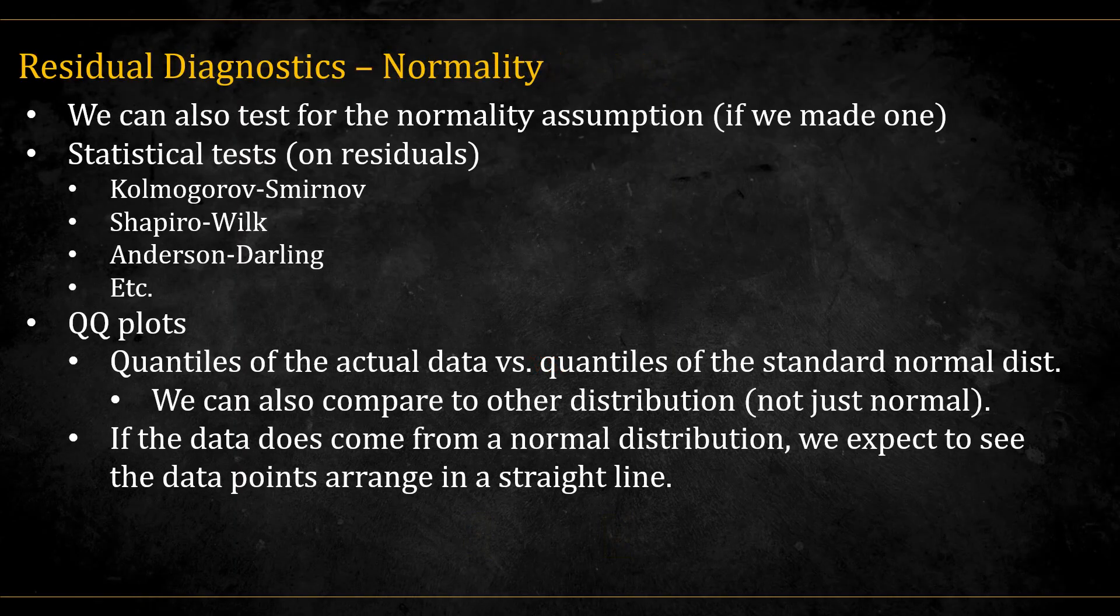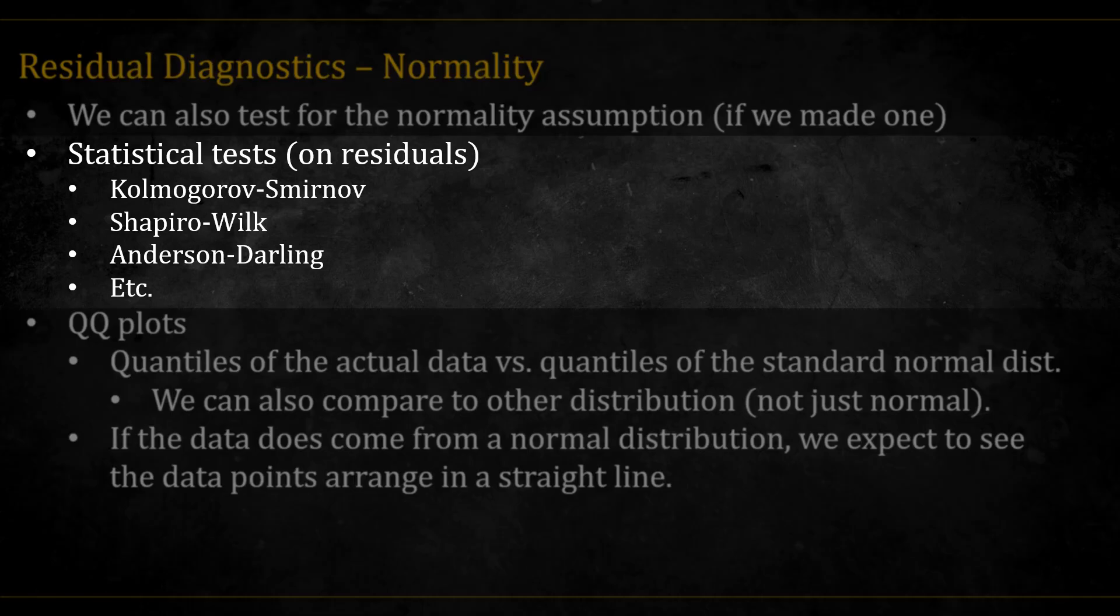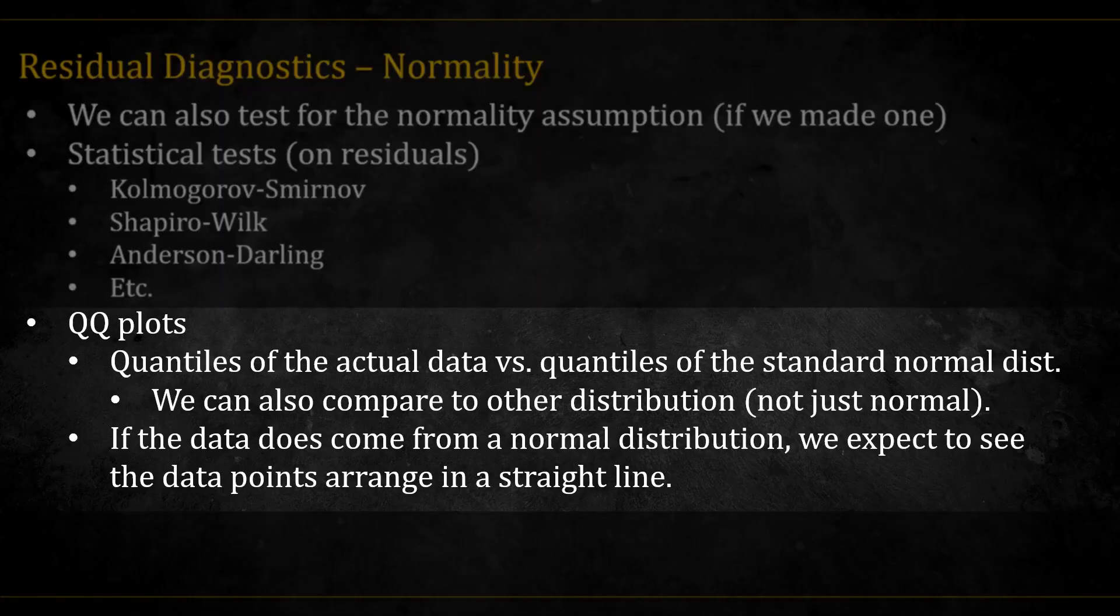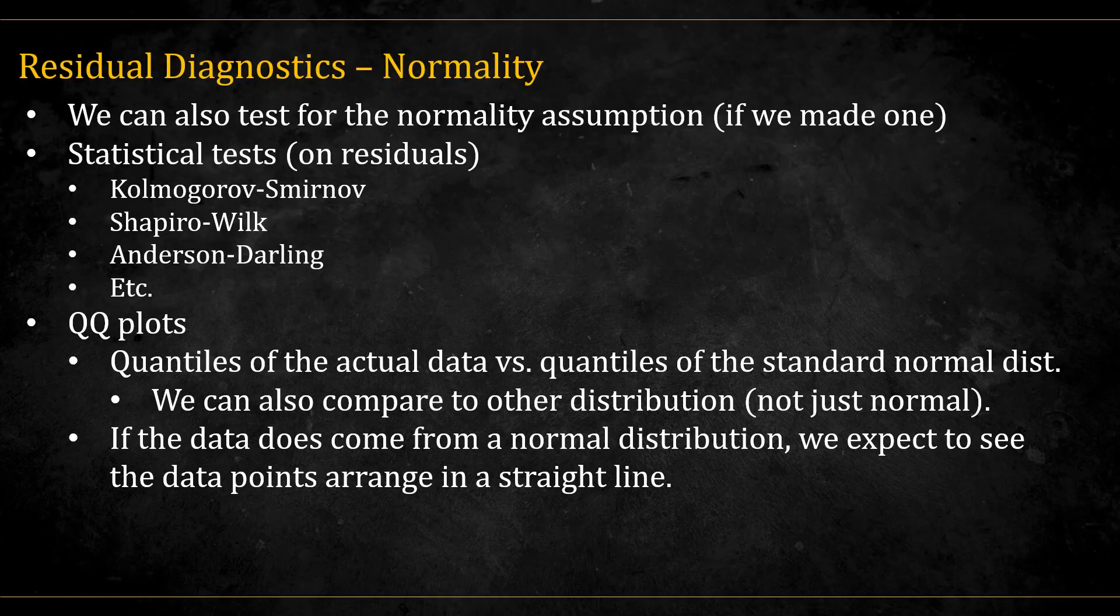We can also test the normality assumption if we made one. There are statistical tests that we can run on the residuals, such as Kolmogorov-Smirnov, Shapiro-Wilk, etc. I won't go into them in this video. There are also QQ plots. These are graphs where we plot the quantile of the actual data versus the quantile of some distribution, in our case the normal distribution. If the data indeed comes from a normal distribution, we expect to see that the data points will arrange in a straight line on the QQ plot.